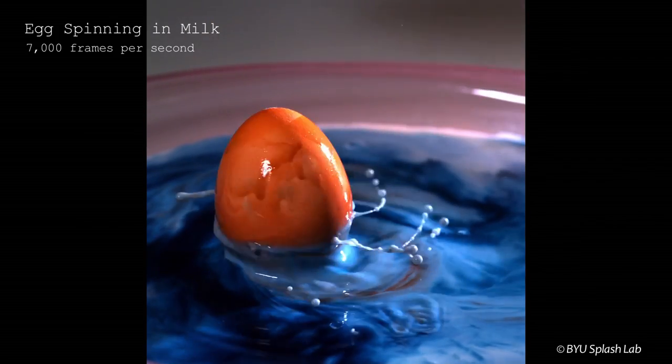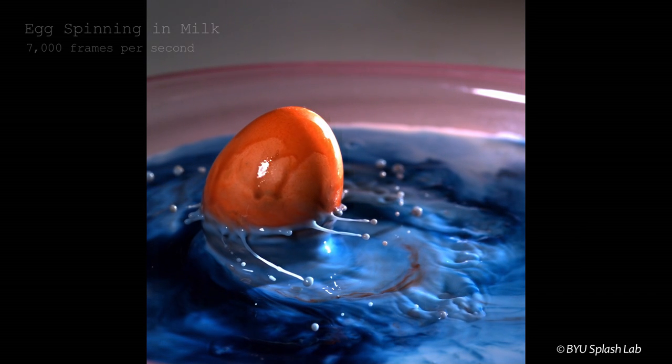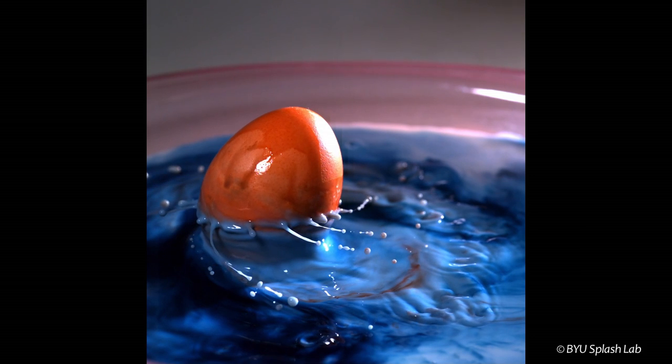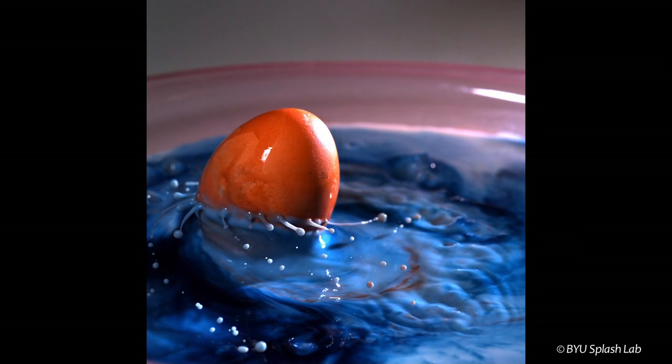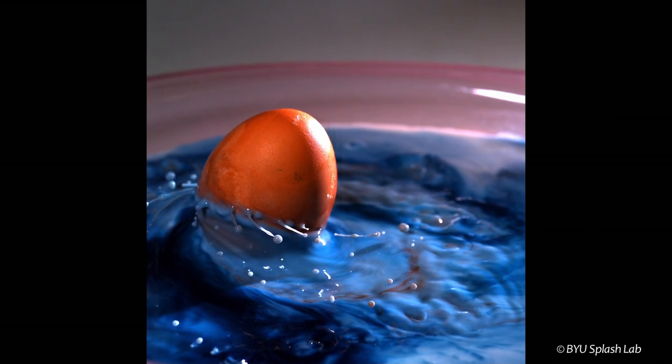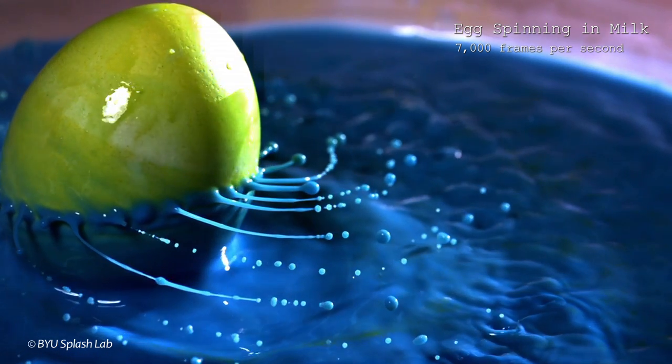If a hard-boiled egg happens to spin into a puddle of milk it'll splatter all over. When the egg spins in the milk we can see that it draws some milk up from the puddle and it forms these really beautiful jets. This happens because of the rotation of the egg. The egg creates a centrifugal force and this force draws this fluid from the puddle and then ejects it at the equator in these really cool looking jets.